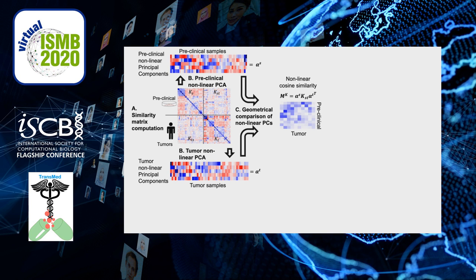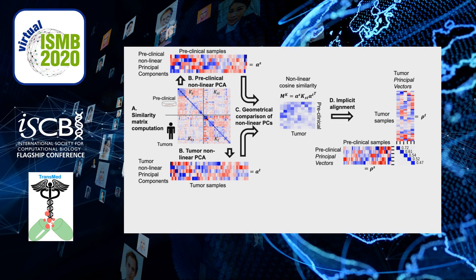We then compare them using cosine similarity, which can be easily computed as shown here. This cosine similarity measures the similarity between each preclinical non-linear PC and each tumor non-linear PC on the x-axis, where 0 means orthogonality and 1 means the same vector. What we observe is that the similarities are scattered — there is not a one-to-one similarity that would be shown by a diagonal. We fix this using the notion of principal vectors: pairs of vectors, one from the preclinical and one from the tumor, that are now aligned, giving us a one-to-one similarity.